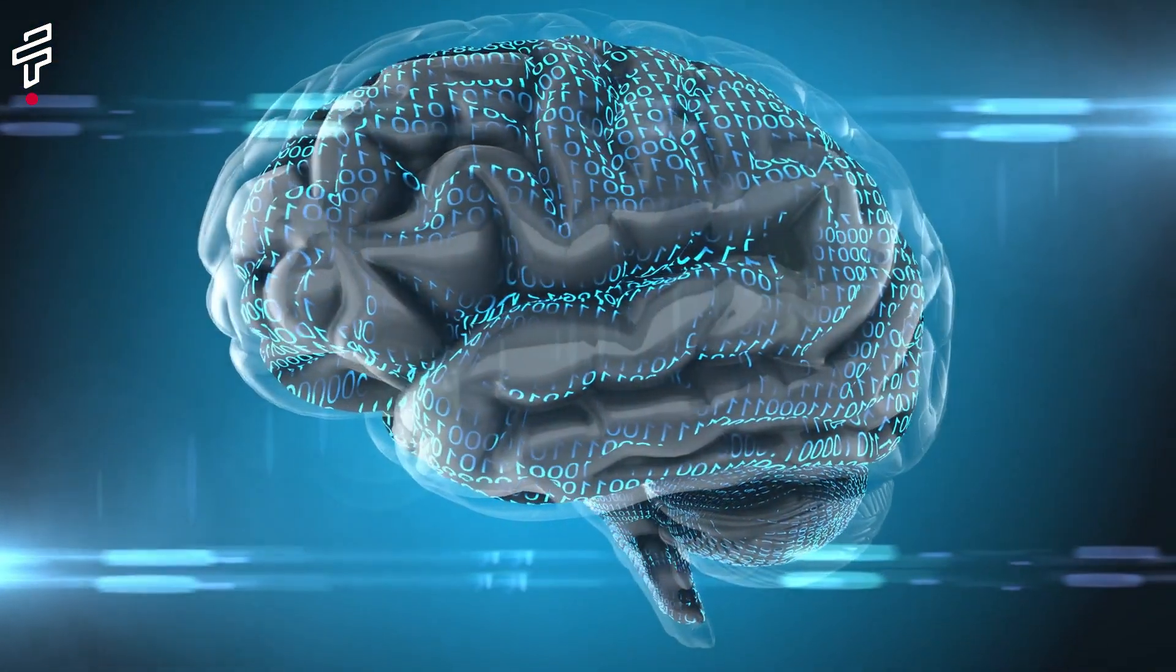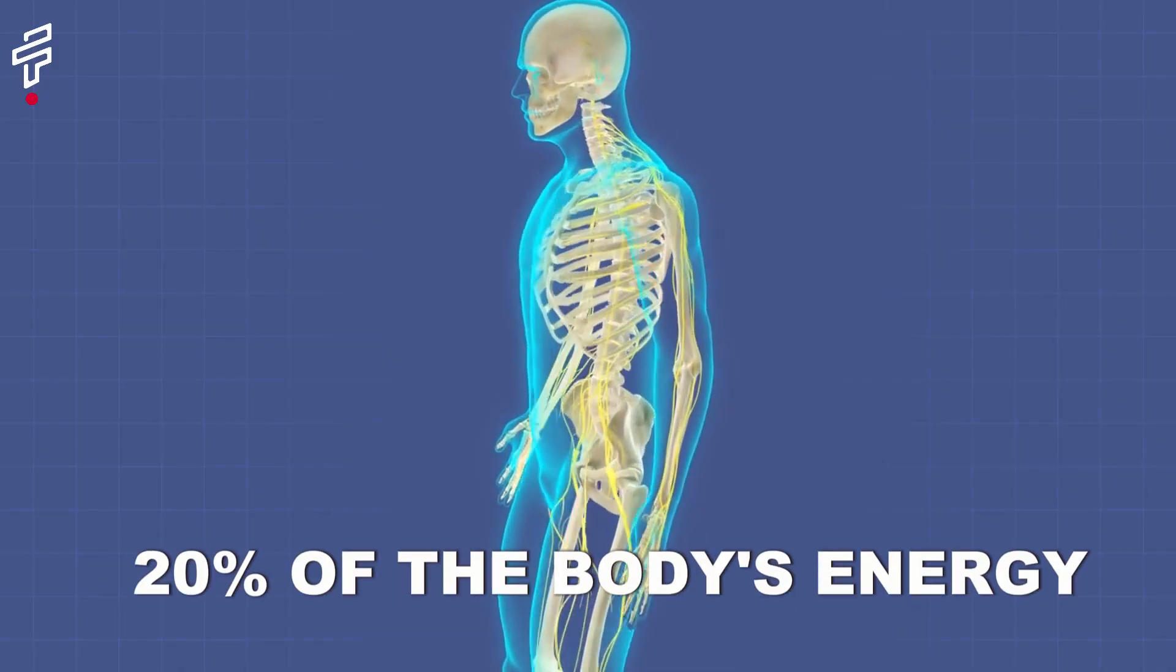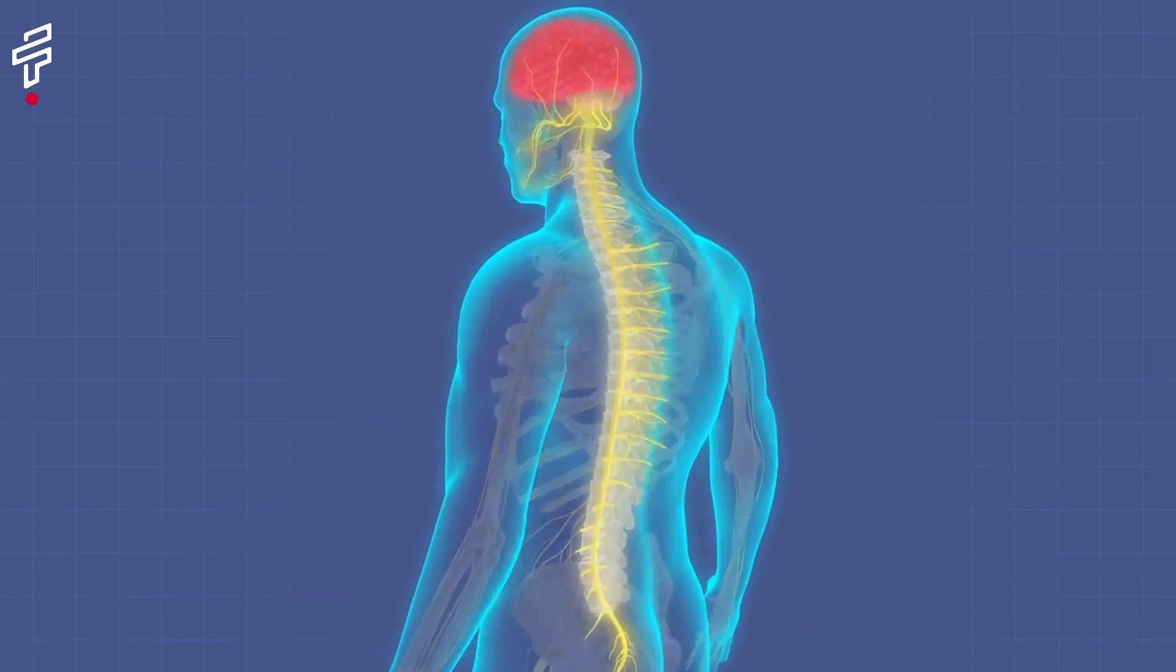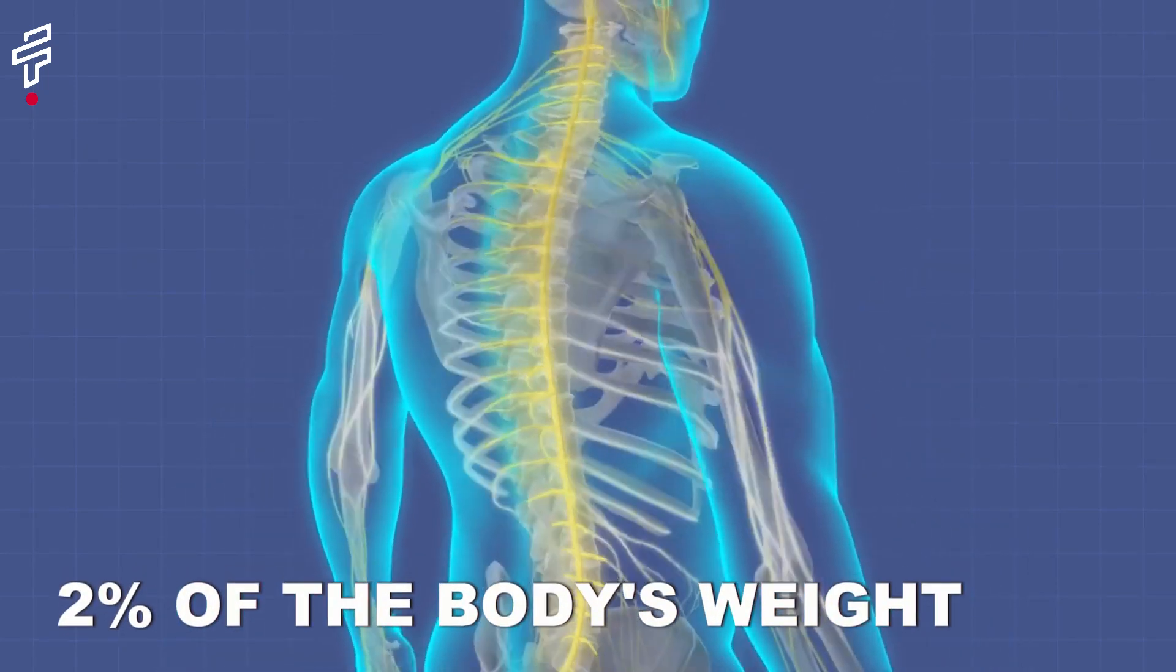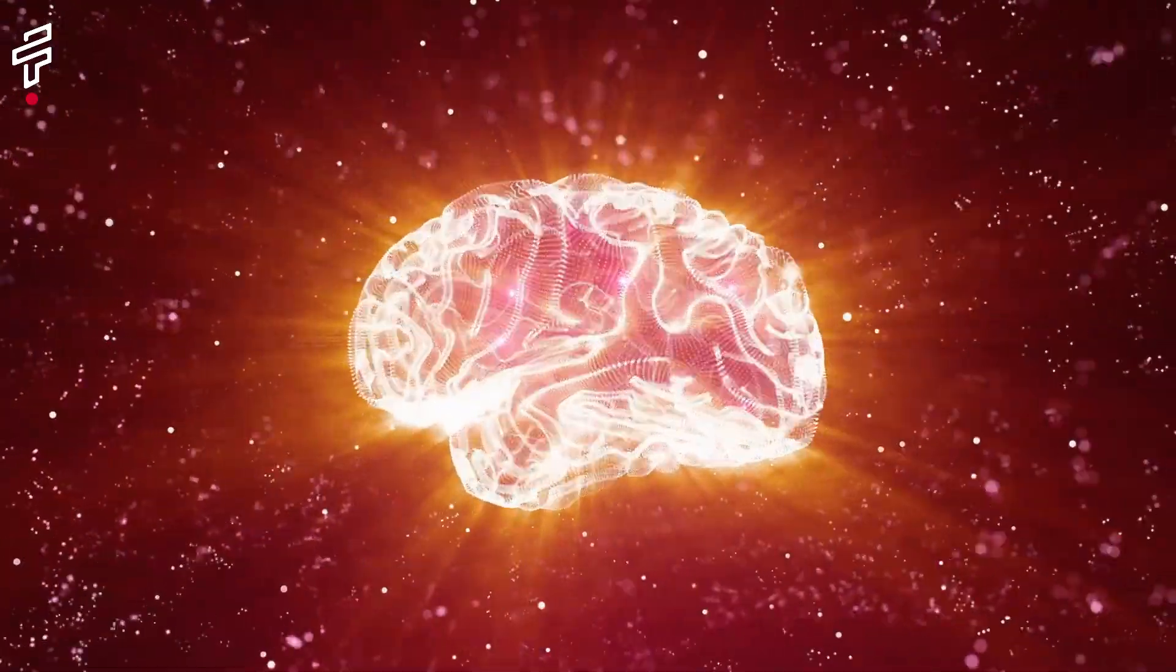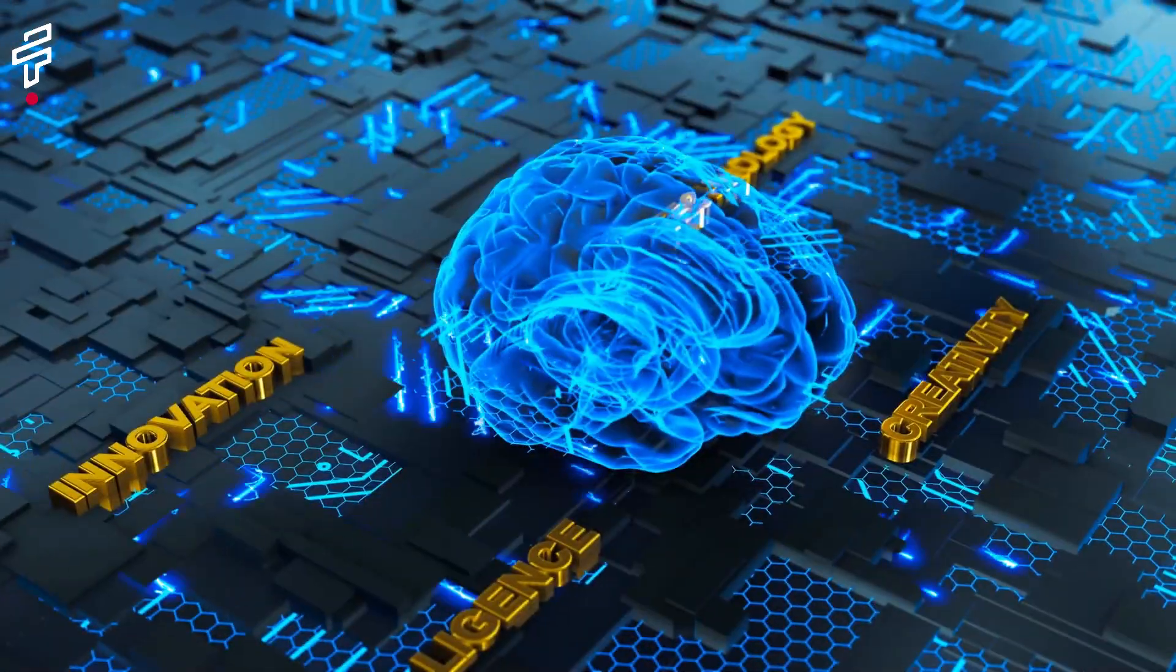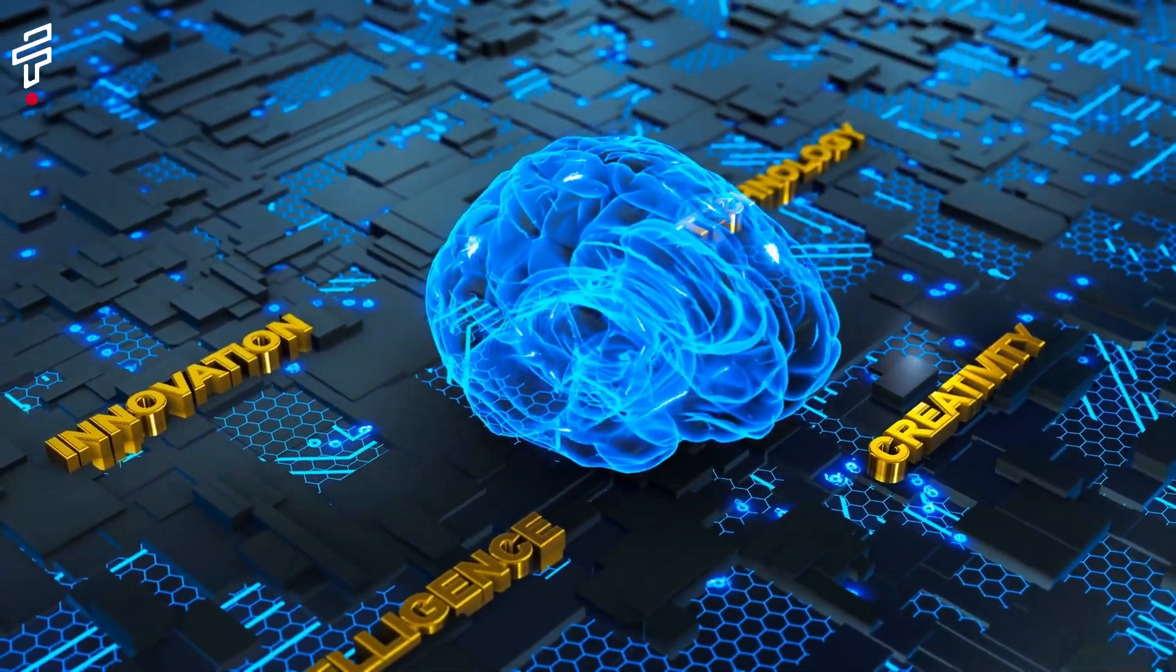Fact number two, the brain is a very active organ even when we're asleep. It uses 20% of the body's energy even though it only makes up about 2% of the body's weight. This is because the brain is constantly working even when we're not consciously aware of it. The brain is responsible for everything we think, feel and do, so it's no wonder that it needs a lot of energy to function.